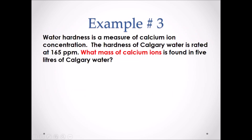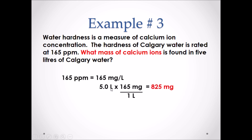Example 3: The hardness of Calgary water is rated at 165 parts per million. What mass of calcium ions is found in 5 liters of Calgary water? Since 165 ppm equals 165 mg/L, we multiply 5 liters by 165 mg/L. The liters cancel, leaving milligrams. There is 825 milligrams of calcium ions in 5 liters of Calgary water.